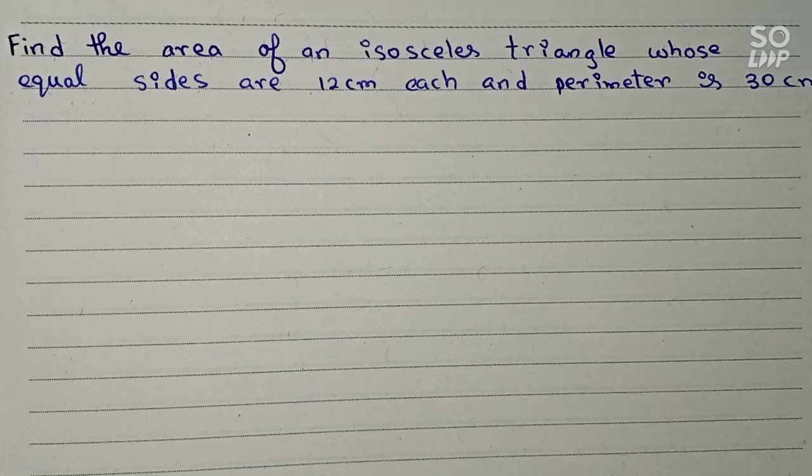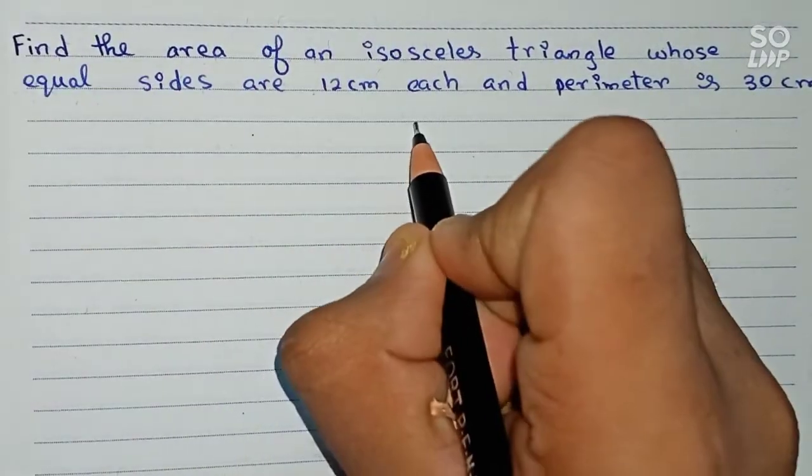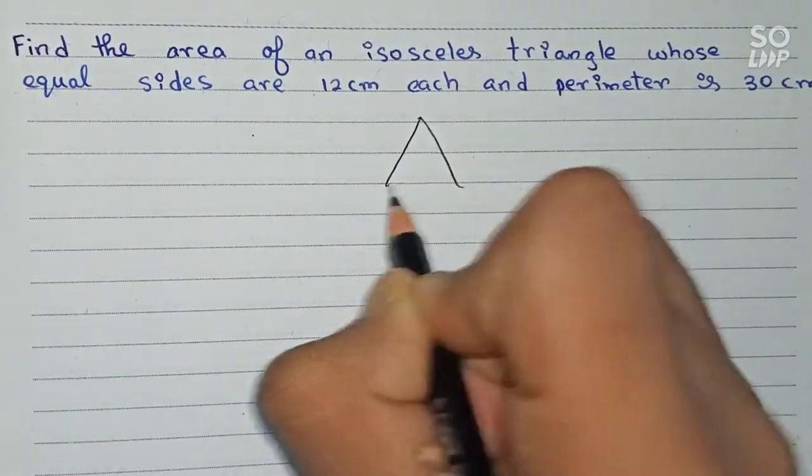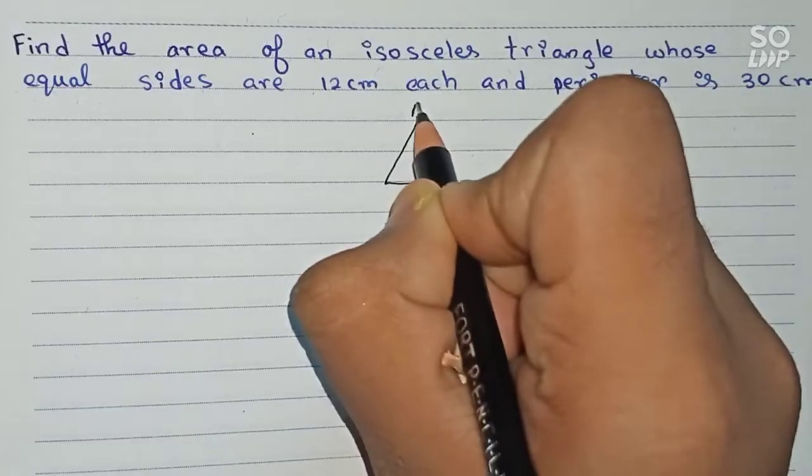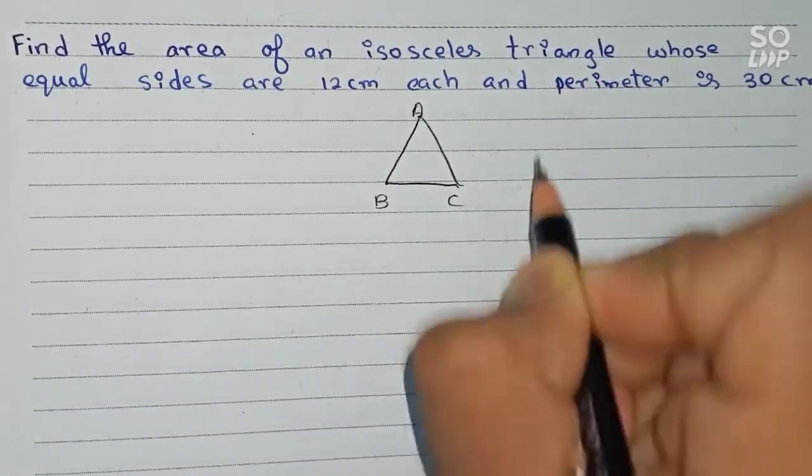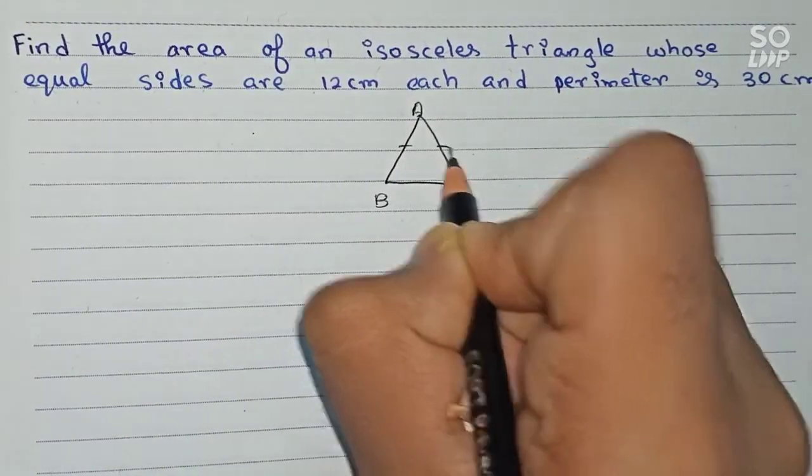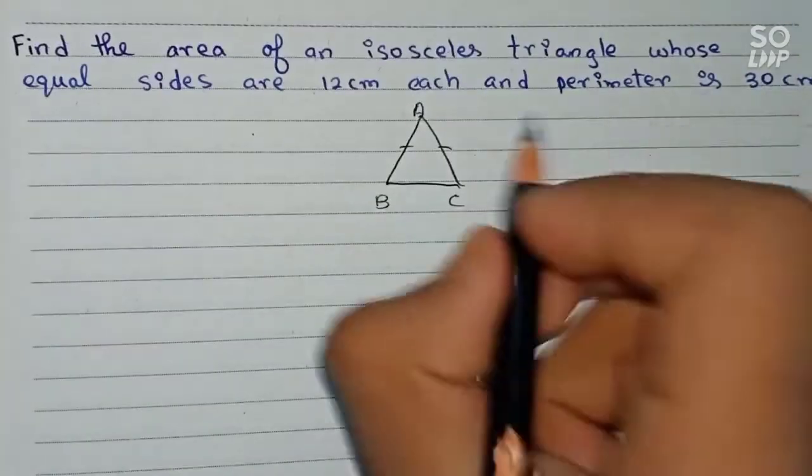So if you draw the diagram, let this be our isosceles triangle and name it ABC. So here AB and AC are equal as it is an isosceles triangle, and it is also given they are 12 centimeters.